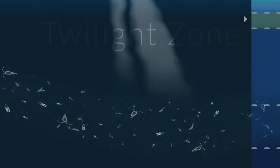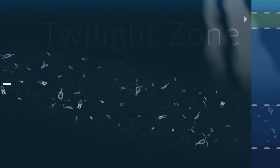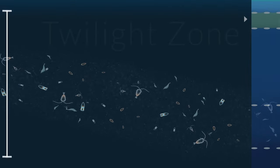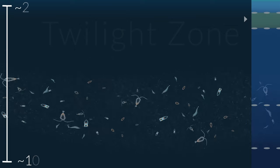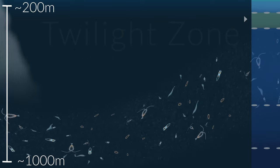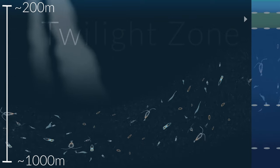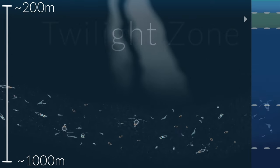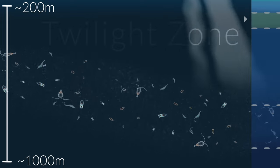Beneath that is the twilight zone, where there is virtually no light. Since this makes photosynthesis difficult, many organisms here migrate through the water column, chasing the faint light created by the sun and moon.